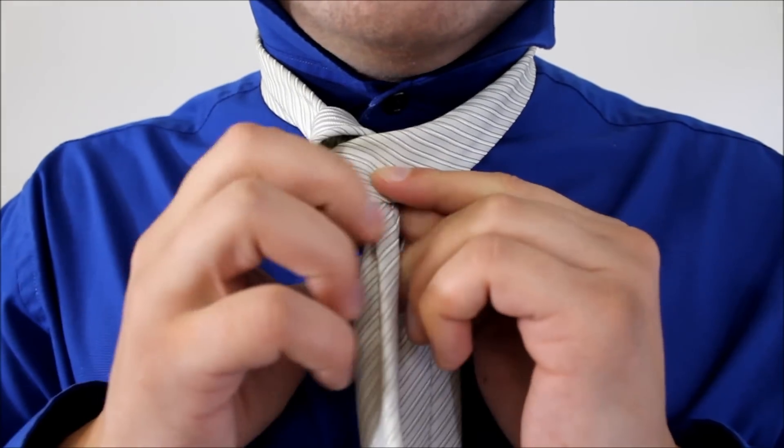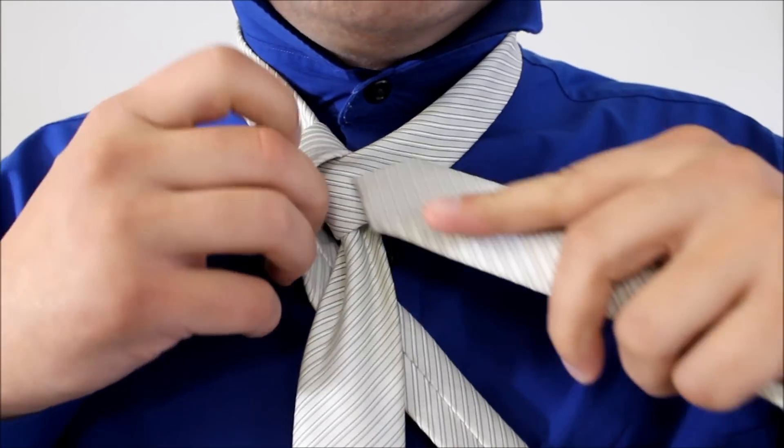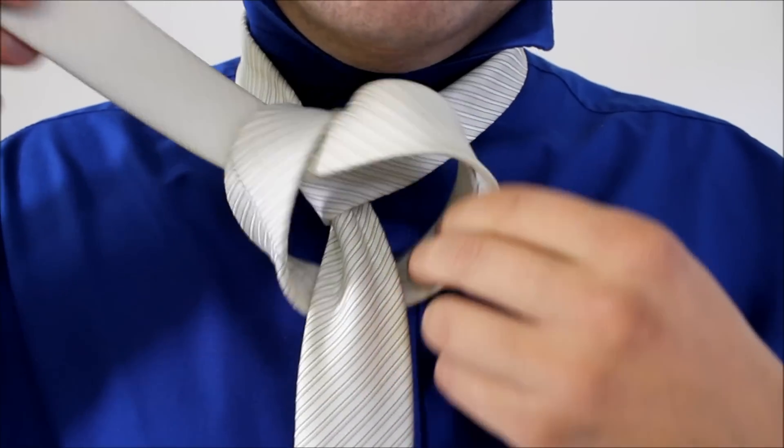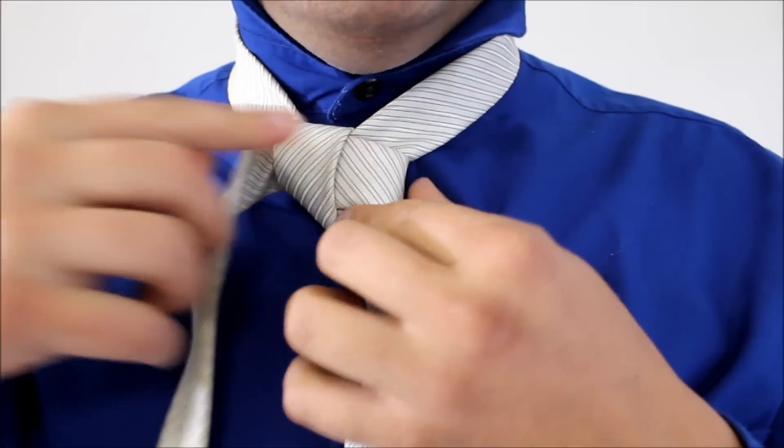And then taking the little end behind the big end, keeping this knot mostly loose—I'm doing it with a skinny tie, seems to be the easiest way to do this. You're going to take the little end and bring it up through that loop that you just brought in the front.